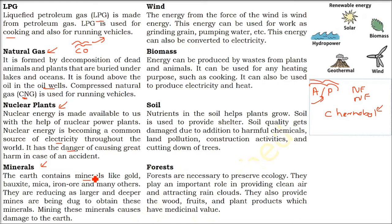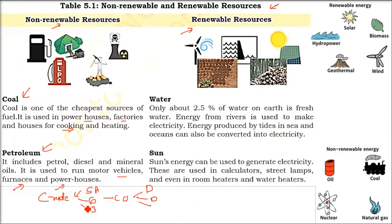Minerals are basically rocks. The earth contains different kinds of rocks important for us, like gold, bauxite (from which we get aluminium), and iron ore (which we convert into steel). Because we are over-utilizing and over-exposing these minerals, they are reducing, and it takes so much time for them to recover. These are non-renewable resources.